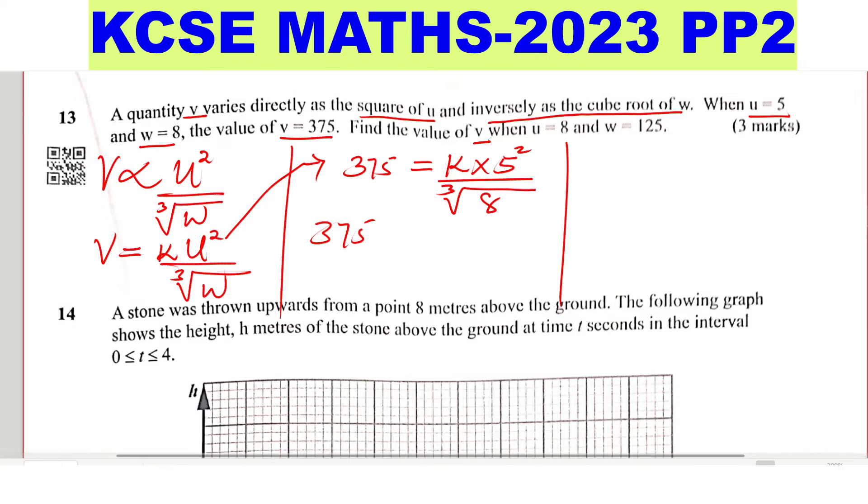So this will give 375 equals 25, 5 squared is 25 times K, give 25K, divided by the cube root of 8.